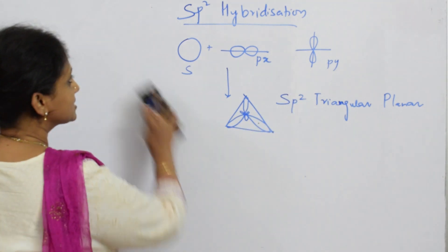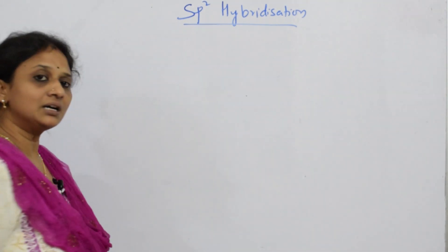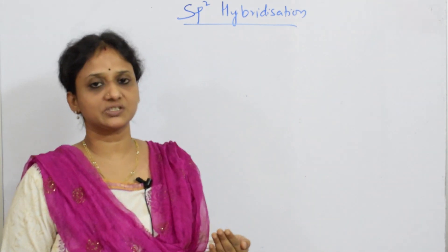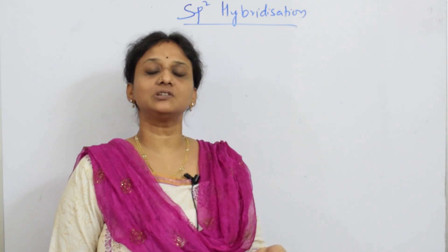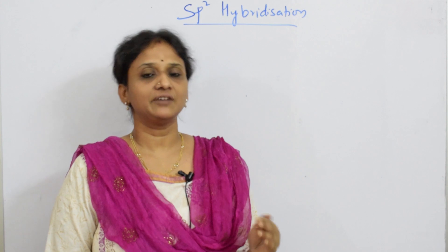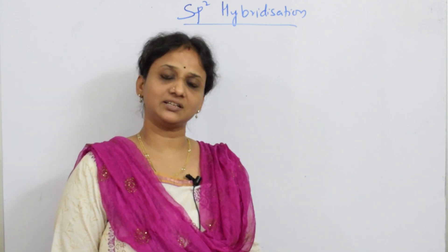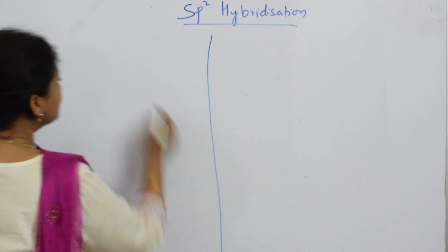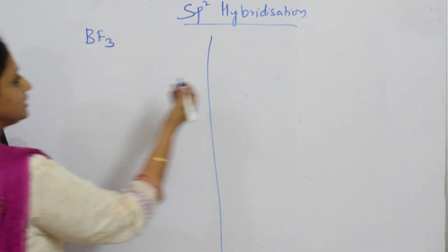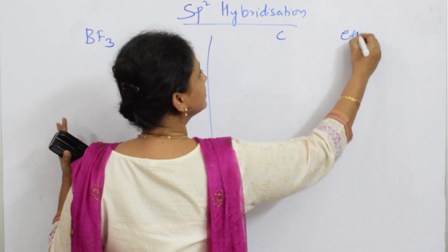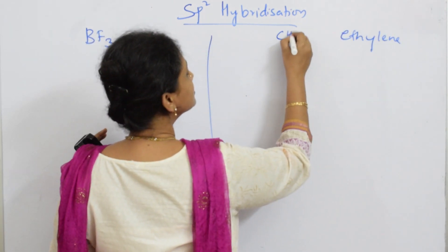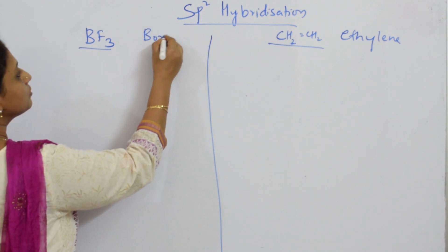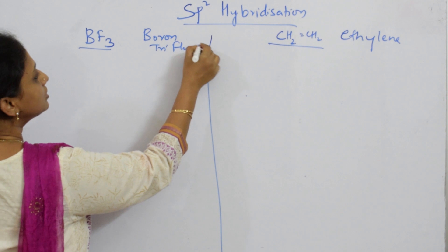When drawing SP2 hybridization structures, go step by step: first look at the ground state, then the excited state, then see how orbitals intermix, check how many pi bonds form, draw the orbital structure, note the s and p character, and determine the shape of the molecule. I'll take two examples for SP2: the first is BF3 (boron trifluoride), and the second is ethylene, with the structure CH2=CH2.